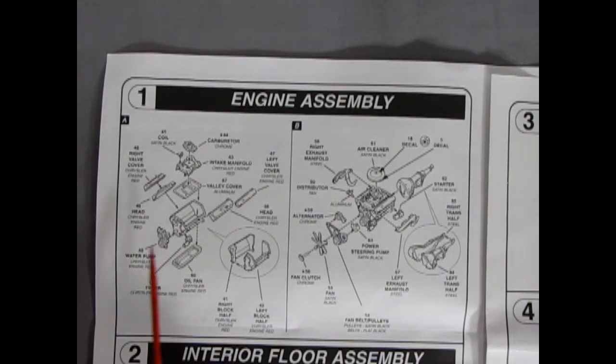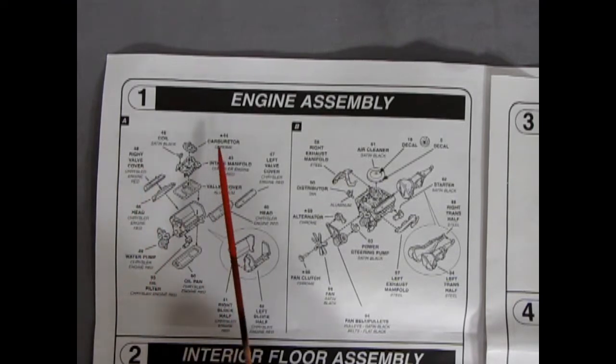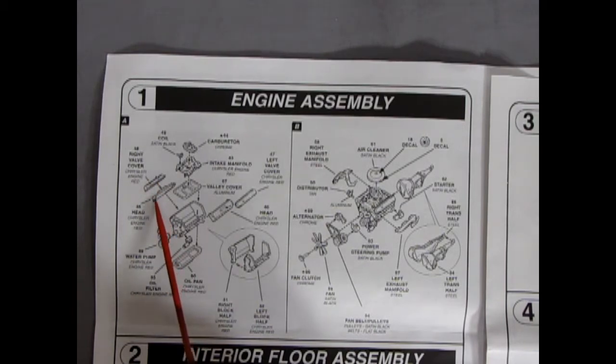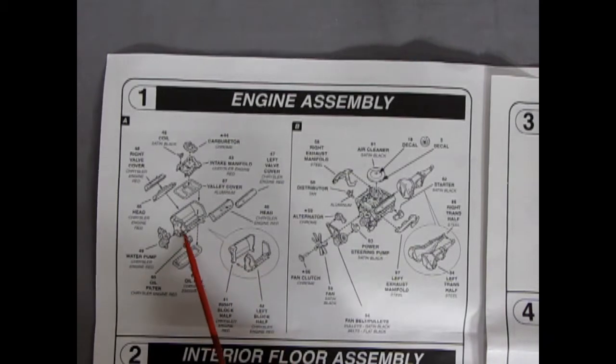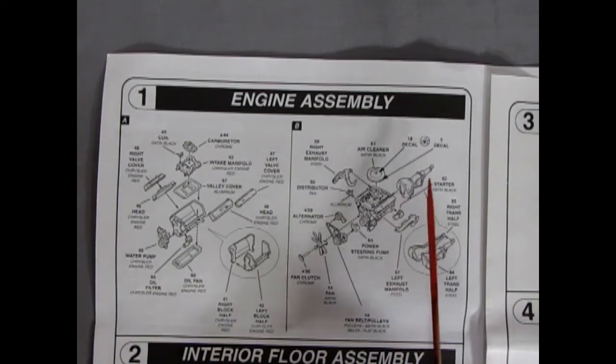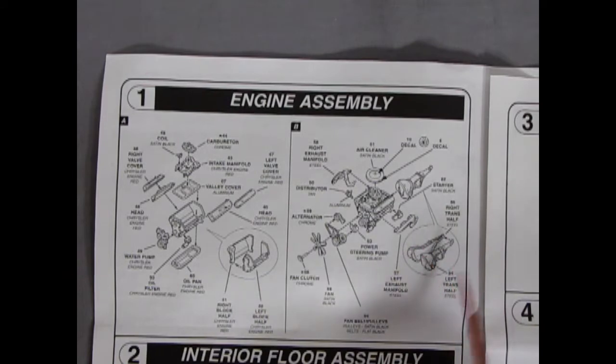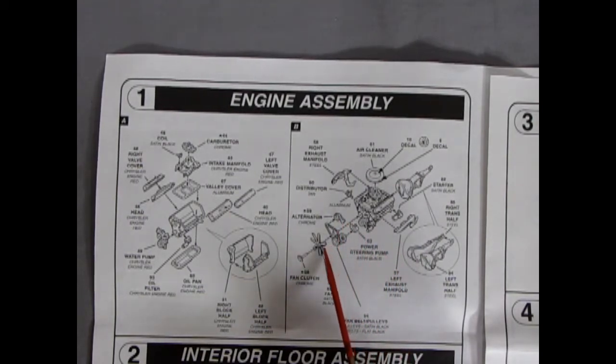In panel one we have our engine assembly and this is in A and B sections. So for the A section we have a carburetor intake manifold coil. You have your valve covers and cylinder heads going on there. The engine block is a two-piece and it's all hollow on the top. Water pump gluing on our oil filter and our oil pan. And then as we come across into the B section we have our exhaust right and left manifolds going on. We've got our starter coming in underneath here. The two-piece transmission going on. Our air cleaner with a decal. And then power steering pump, alternator, the belts and pulleys, the fan and the fan clutch.